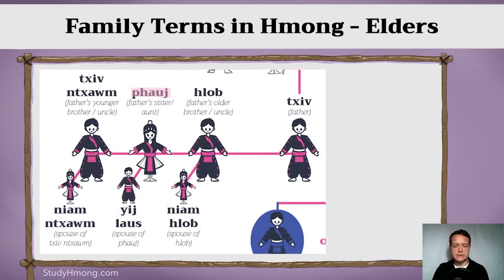What about your father's sister? Whether she's older or younger, it doesn't matter — you would call your father's sister Pao. And you would call your father's sister's husband Yi Lao. So your aunt is called Pao, and your father's sister's husband is called Yi Lao.